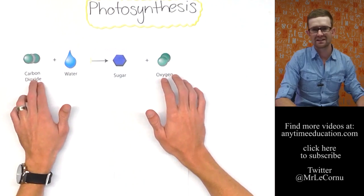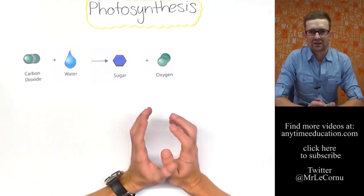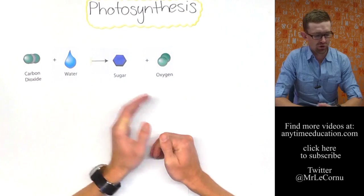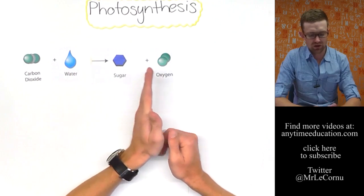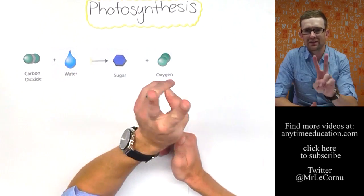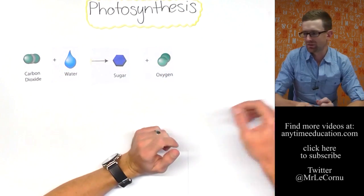That's a simple summary of the reaction that takes place in photosynthesis. Now just bear in mind that is absolutely a summary of what's happening. It's been simplified for you but it's carbon dioxide plus water makes sugar and oxygen.